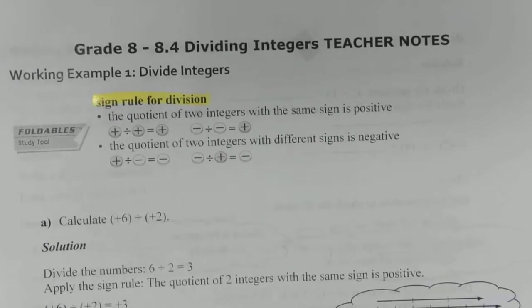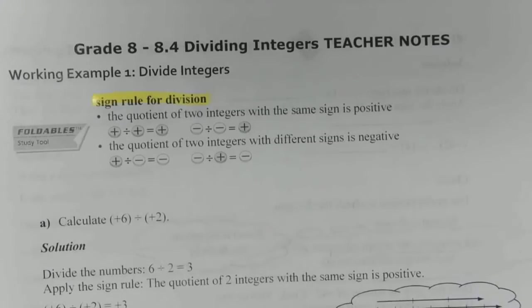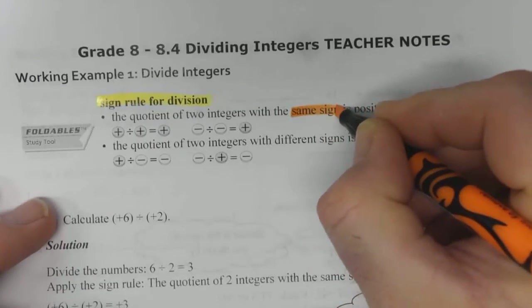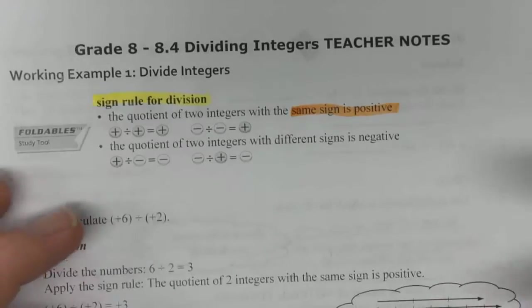The quotient of two integers with the same sign is positive. Like multiplication, if the signs are the same, we have a positive outcome.